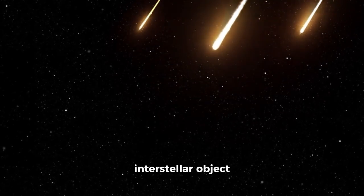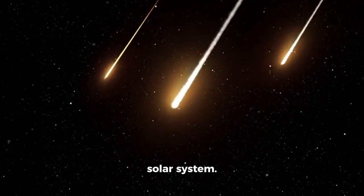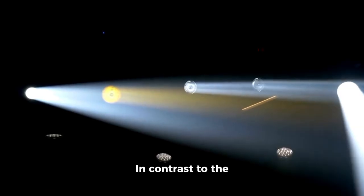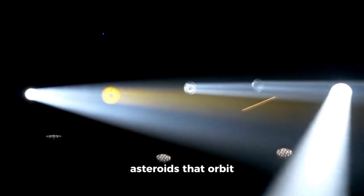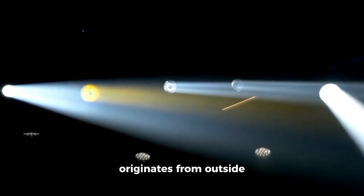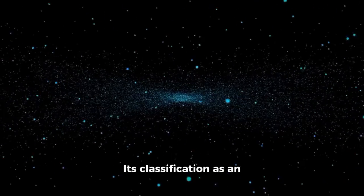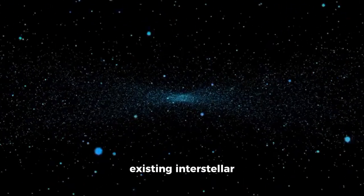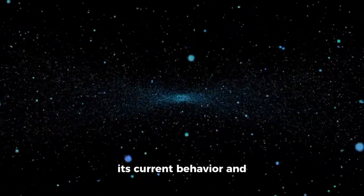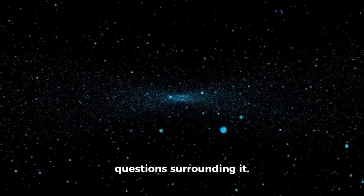3Eye AT is the third interstellar object ever discovered passing through our solar system. In contrast to the usual comets and asteroids that orbit the sun, 3Eye AT originates from outside our solar system, moving at remarkable speeds. Its classification as an existing interstellar object makes it rare, but its current behavior and appearance have intensified the questions surrounding it.